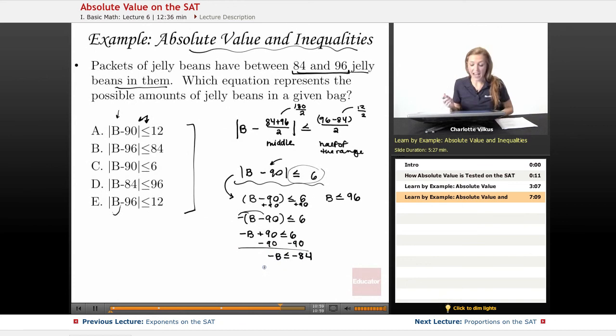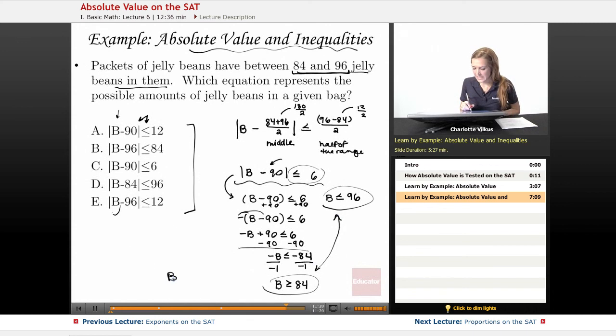And then when I divide both sides by negative 1 to get just b, I'm going to have to flip the sign so I get b is greater than or equal to 84. And when I look at this, this is in fact my two bounds. I have that b is between these two numbers. So putting it into this equation form is doing the same for me as saying that b is greater than or equal to 84 and less than or equal to 96.